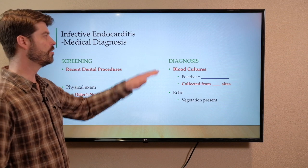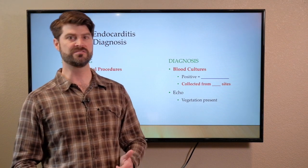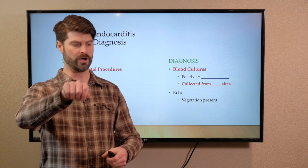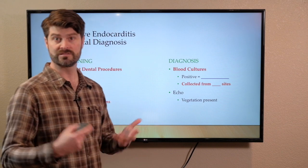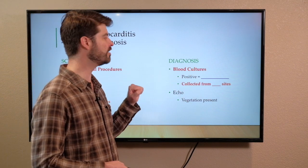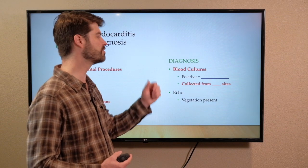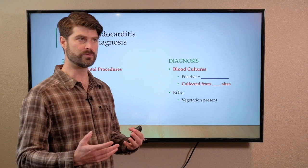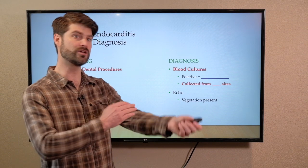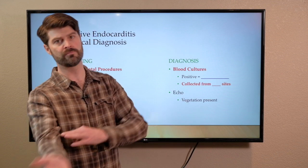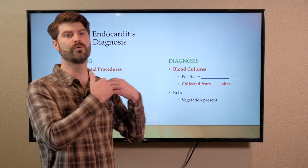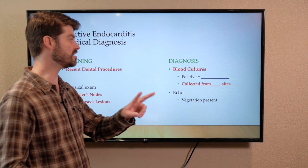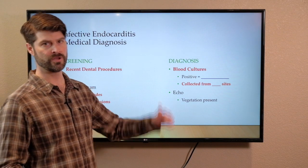To confirm diagnosis, we do blood cultures. Positive blood cultures mean the patient has bacteria in their blood — we're trying to grow bacteria from the blood, so positive means there is positive bacterial growth. Whenever we collect blood cultures, we do it from two different sites to rule out any possible contamination from the venipuncture. We'll collect from left arm and right arm. If a patient has a central line or an IV, we can draw one sample from that device, but the other has to be a venipuncture site.